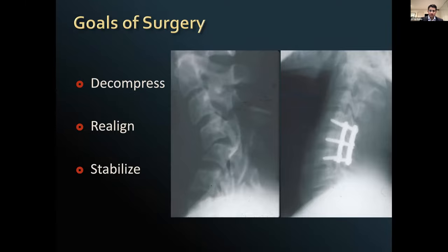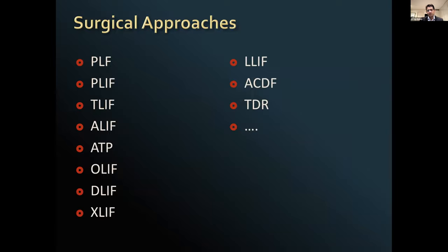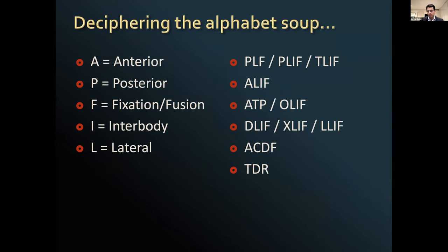Some of the operations we use — it quickly becomes alphabet soup — but it's not that complex. We have anterior operations, posterior operations, and fixation and fusion approaches. These are all posterior operations: posterior lumbar fusion, posterior lumbar interbody fusion, transforaminal fusion. We also have anterior or oblique approaches, lateral approaches. Simply, you can think of anterior, posterior, or lateral approach, each with certain advantages and disadvantages, and each better suited to certain pathology or conditions.